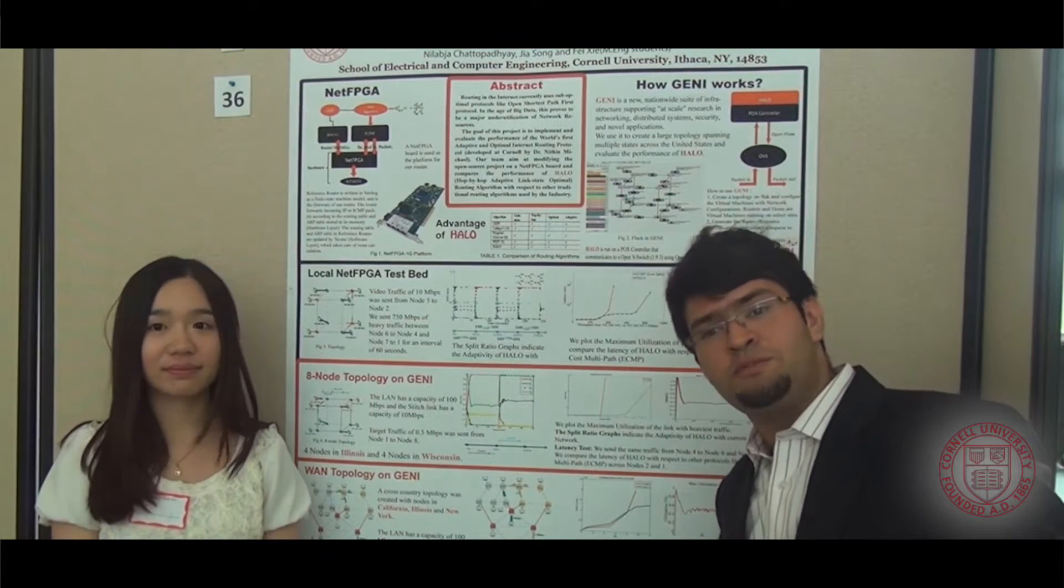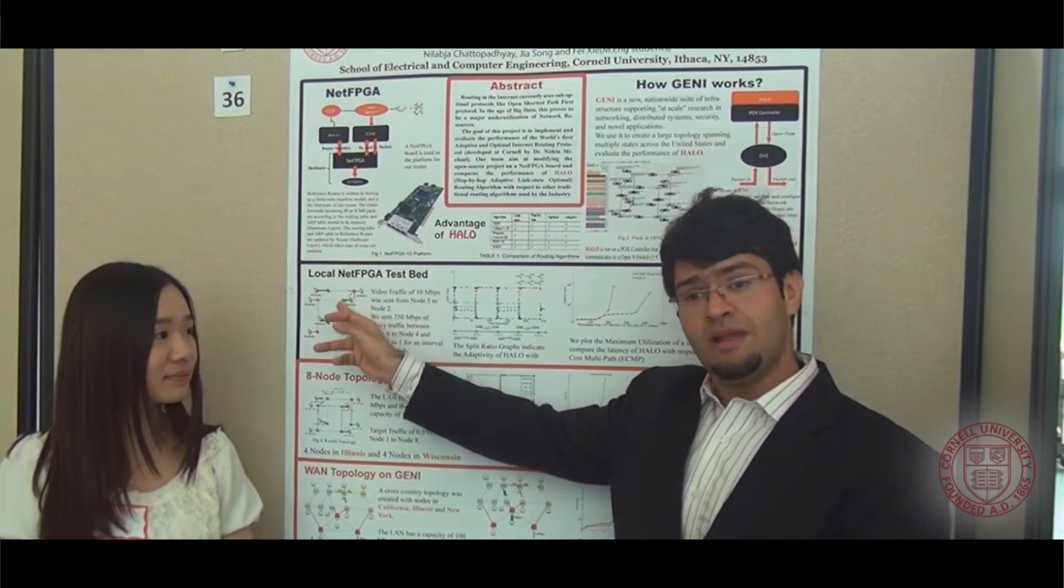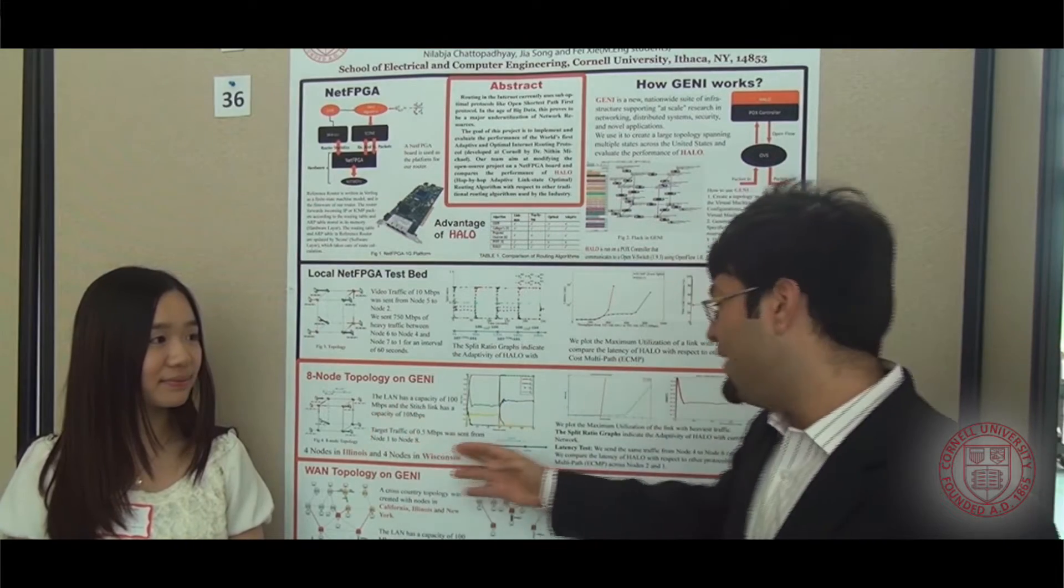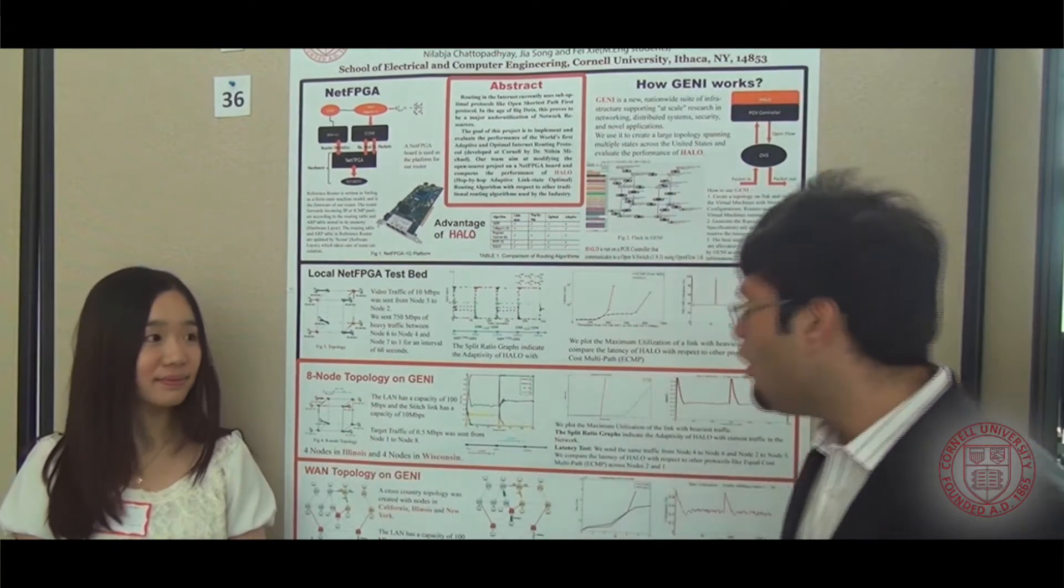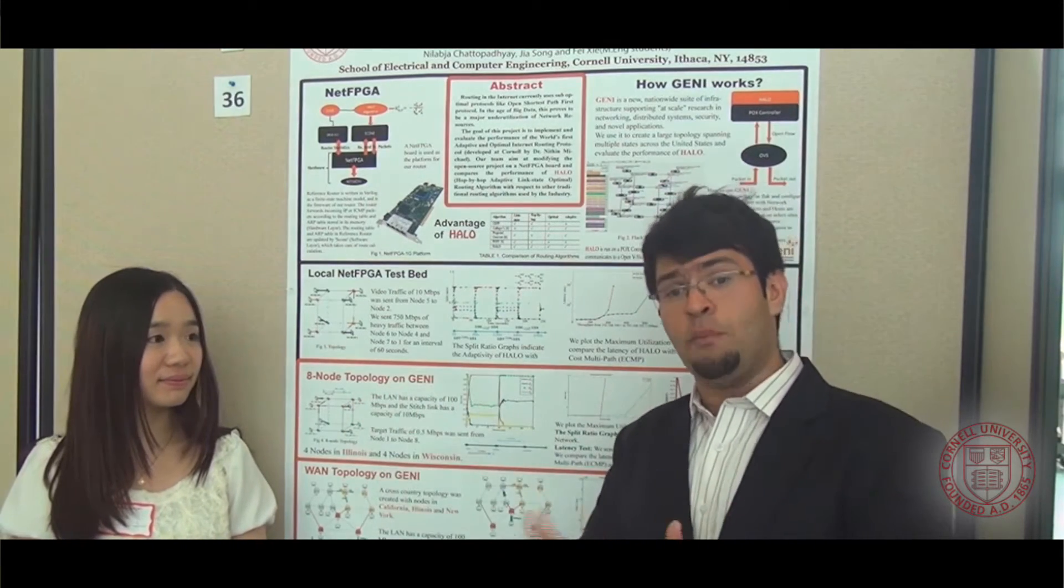We have three sets of experiments. The first one is in our lab with eight physical servers. And the second experiment is on Genie, wherein we have a network spanning Illinois and Wisconsin. What we do is we send traffic and we figure out how the traffic is optimally split.